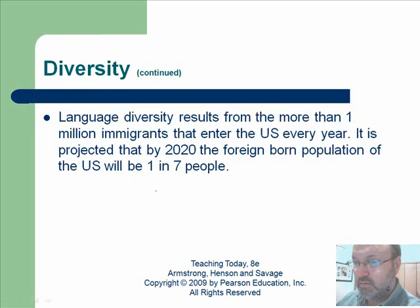Language diversity results from more than one million immigrants who enter the US every year. It's projected that by 2020 the foreign-born population of the US will be one in seven people. That's significant — one million new people entering each year, even at a time when we're talking about how strained our country's resources are.